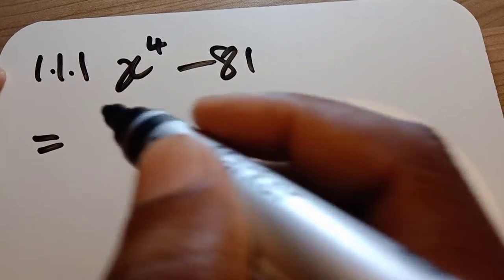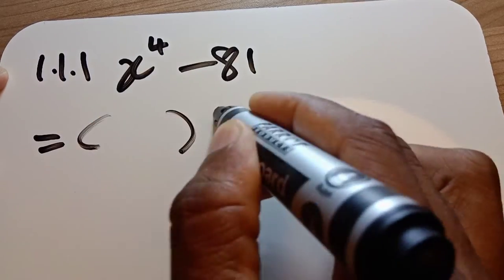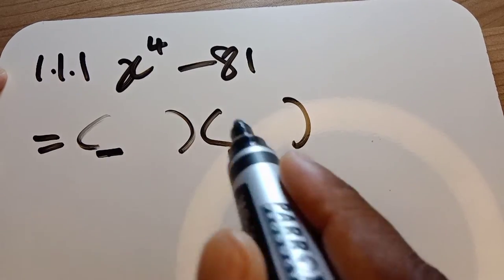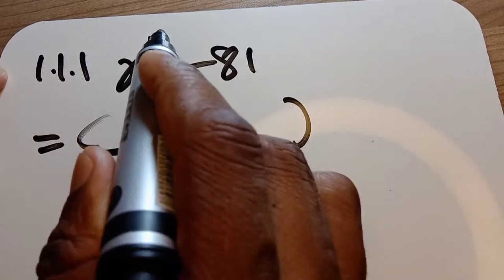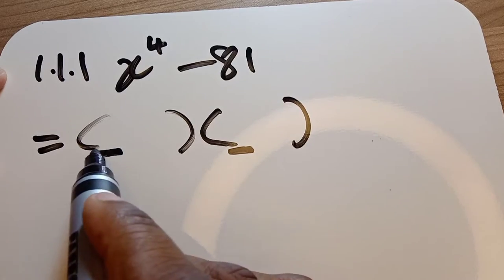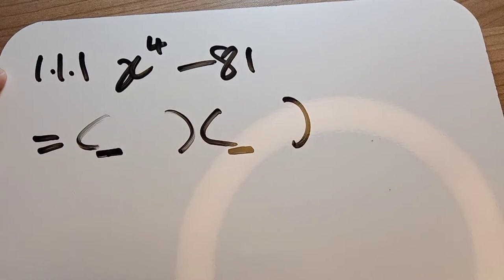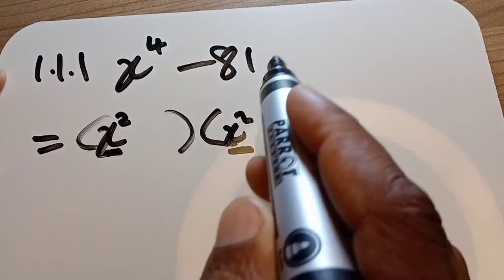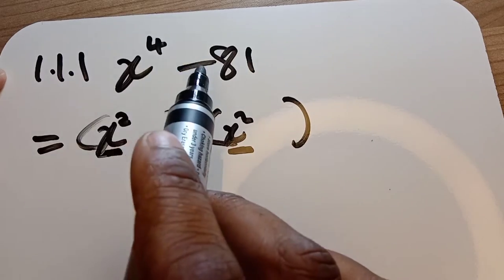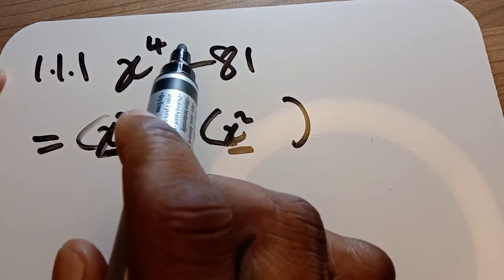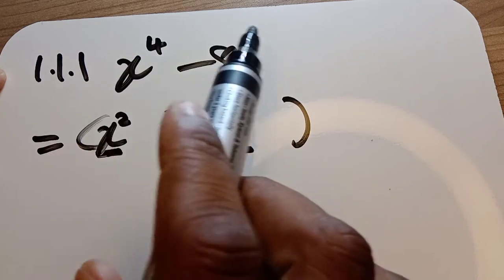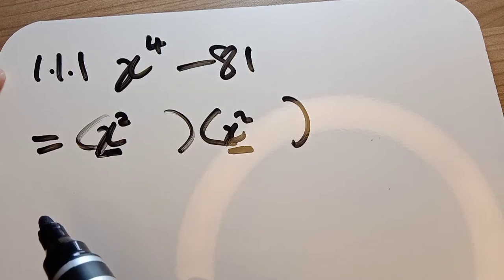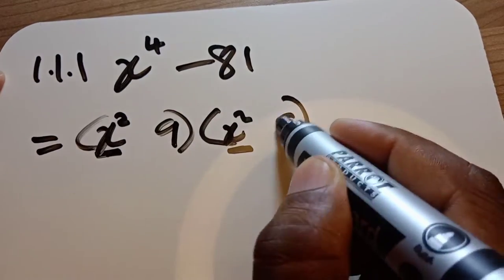This means we must have two binomials multiplying each other. Whatever sits in each binomial must multiply to give us x to the exponent 4. This is a difference of two squares — 'difference' refers to the subtraction. You must have a perfect square and a perfect square subtracting each other. So we use x squared and x squared, and we use 9 and 9.